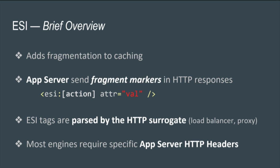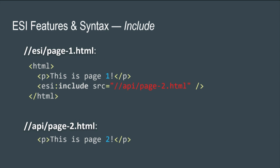These tags are parsed when a specific HTTP header is sent by the application server, so you're not able to inject ESI everywhere — but usually when ESI is used it's implemented everywhere. The most relevant ESI tags are ESI includes. You have two files: page1.html sitting on the ESI server, and page2 on another server called API. Page1 has an ESI include tag pointing to page2.